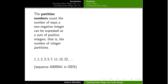Now related to the Bell numbers are the so-called partition numbers, which count the number of integer partitions of a non-negative integer n. By an integer partition, I mean something like the following: if we wanted to partition the number six, we could write it as two plus two plus two, or three plus three, or three plus one plus one plus one — any way to express the number as a sum of positive integers.